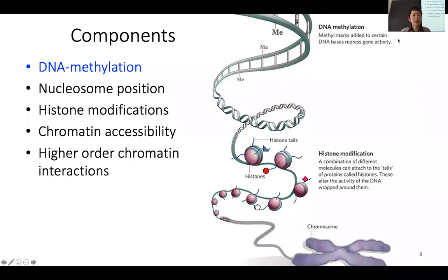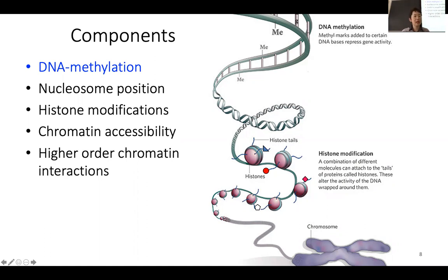There are different components of epigenetics, and in this lecture and the next lecture, we will continue to talk about each different component. We start with DNA methylation. This is a modification that happens directly on the DNA — it doesn't change the nucleotide sequence. Looking at double-stranded DNA, it can form the double helix, wrap around histones to form nucleosomes, and then be packaged into the chromosome.